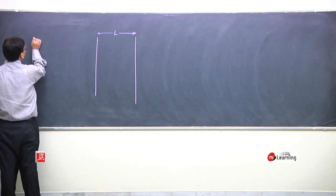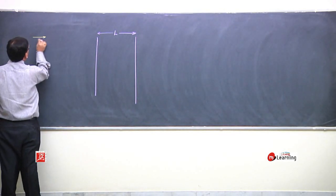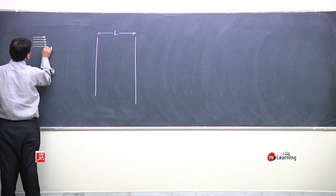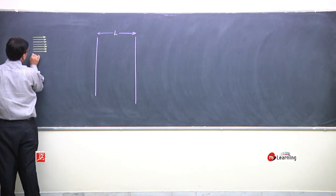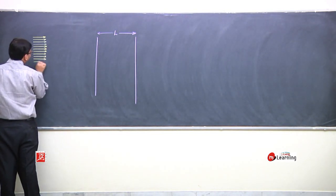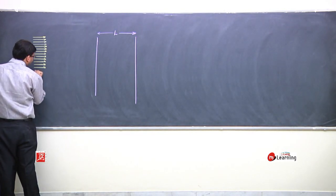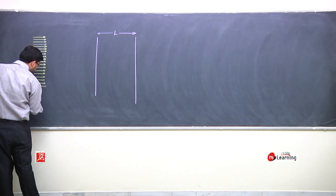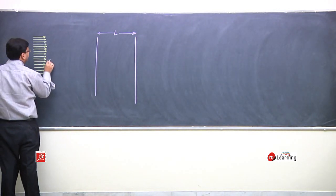Here I am showing an X-ray beam, and by the spacing between the arrows, I will try to show the variation in intensity. Please observe the spacing between these arrows carefully — they are closely spaced, and by this close spacing, I mean that the beam has a good intensity.